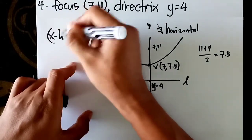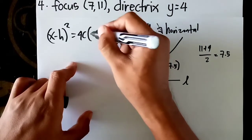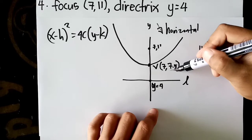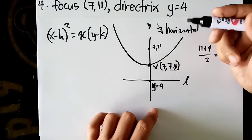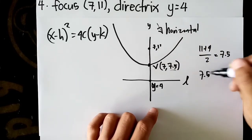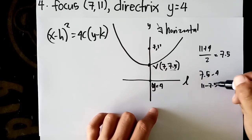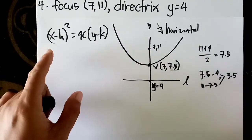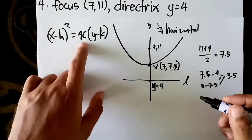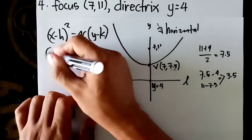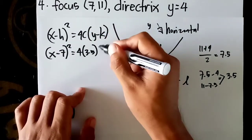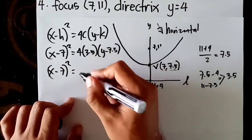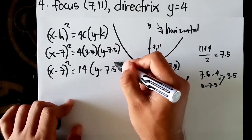Since it opens upward, x is squared. The form is (x - h)² = 4c(y - k), positive since upward. To find c: 7.5 - 4 = 3.5, or 11 - 7.5 = 3.5. So c = 3.5. Substituting: (x - 7)² = 4 times 3.5, which is 14, times (y - 7.5). Your answer is (x - 7)² = 14(y - 7.5).